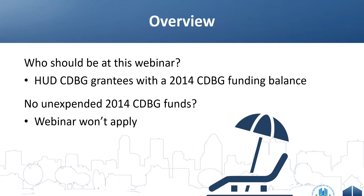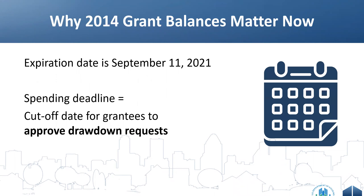This webinar is intended for grantees that still have undisbursed 2014 CDBG funds. Why do 2014 grant balances matter now? The 2014 grants expire this September 11th. Any 2014 funds remaining after that date will be lost to your program and your community. It is important that all draws be requested and approved by the grantee by September 11th to avoid losing these funds.